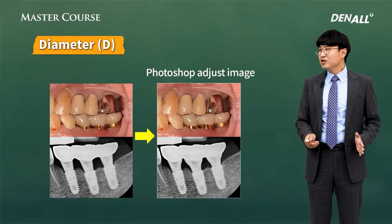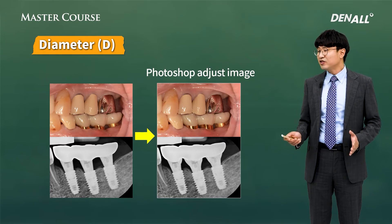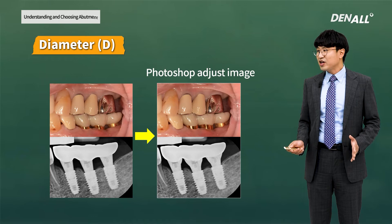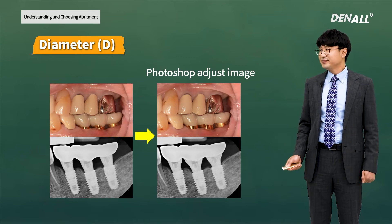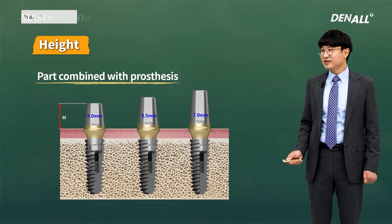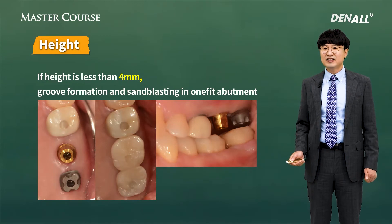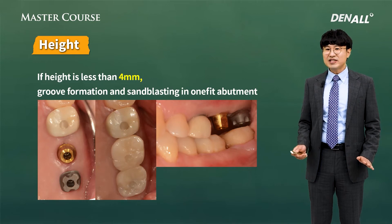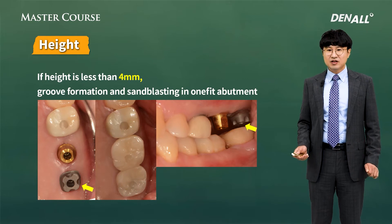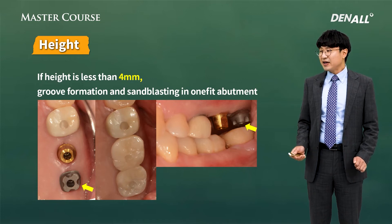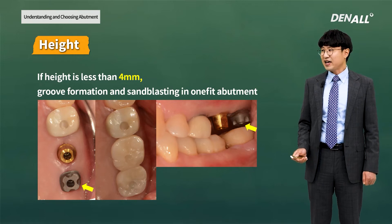On the left is a stock abutment; the right one is a one-piece abutment, the customized abutment form reproduced with Photoshop. Using a one-piece abutment is favorable in far more cases. When choosing an abutment, another consideration should be given to the height. If the abutment height is over 4 mm, no action is needed to prevent prosthetics loss. However, if it is less than 4 mm, the customized abutment is fabricated. To prevent loss, groove formation and sand blasting will help.